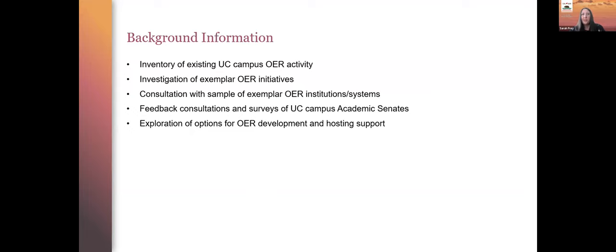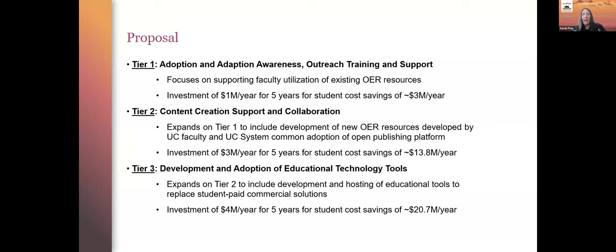We connected with all of the campus academic senates and various committees there to get their input and suggestions to guide the work. We also just looked at options for what platforms are available and where we can host things. Our outcome from the task force's work was a recommendation of a three-tier model for looking at a system-wide OER initiative. Tier one was really an adoption-adaptation phase—almost a marketing campaign to our faculty and students about the benefits of using open educational resources, the resources already out there, and providing a robust support mechanism to help people adopt those resources.